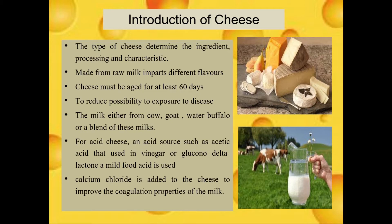Cheese is made using cow, goat, water buffalo or a blend of these milks. For acid cheese, acid sources such as acetic acid used in vinegar or glucono-delta-lactone, a mild food acid, is used. Sometimes, calcium chloride is added to the cheese to improve the coagulation properties of the milk.